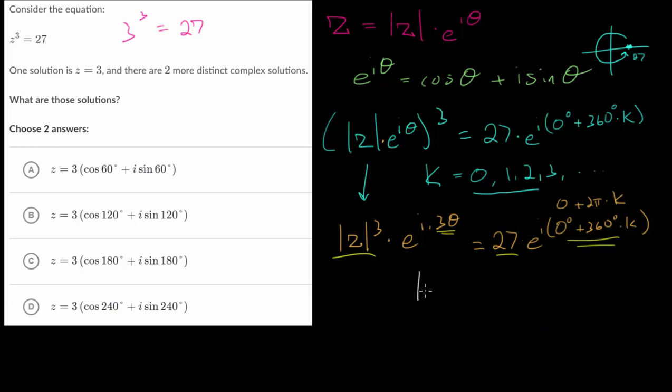We can say that the magnitude of z to the third power would be 27. And to solve this, we can just take each side and raise them to the one-third power, or take a cube root of each side, so that we find the magnitude of z is really just the third root of 27, which we're looking for its real solution here, and that would be 3. So the magnitude of each of our solutions will be 3.